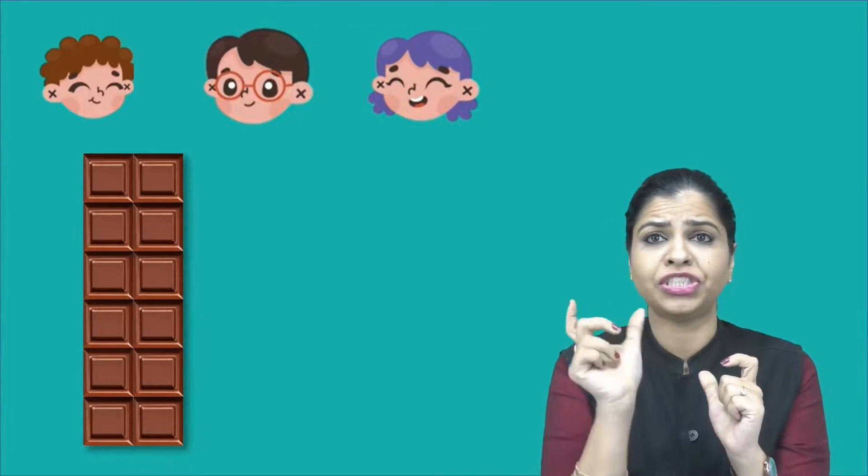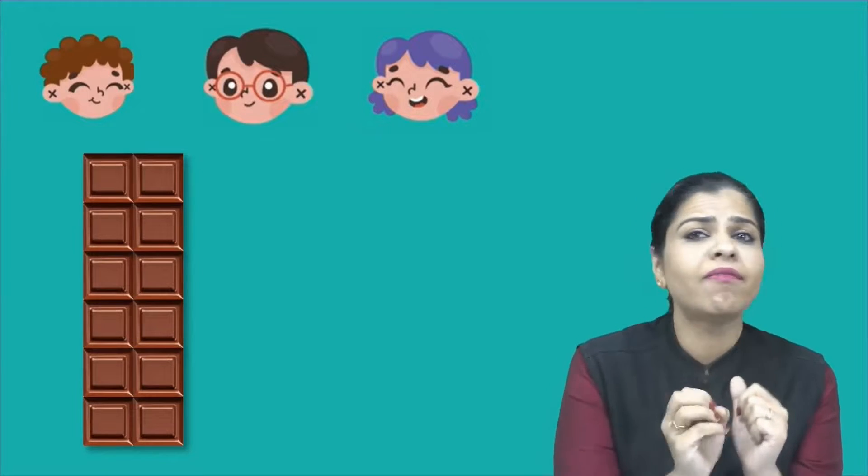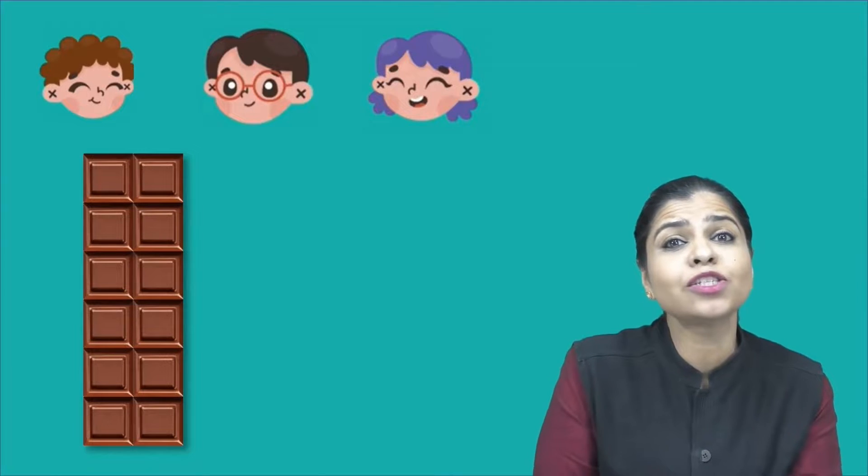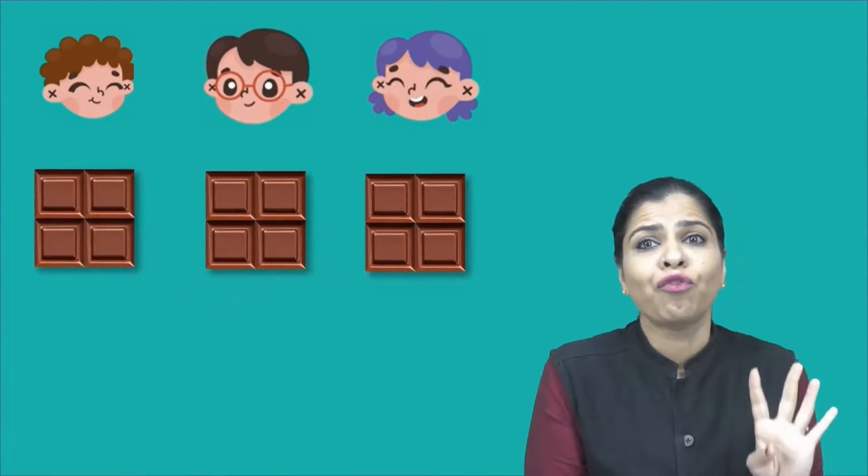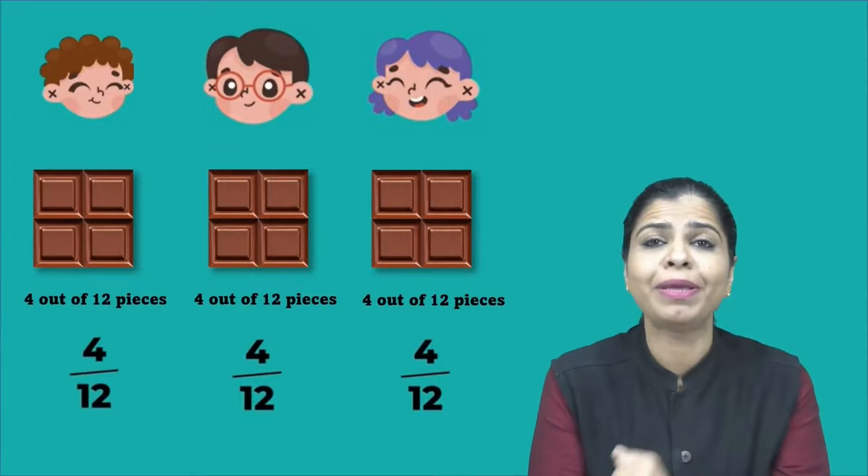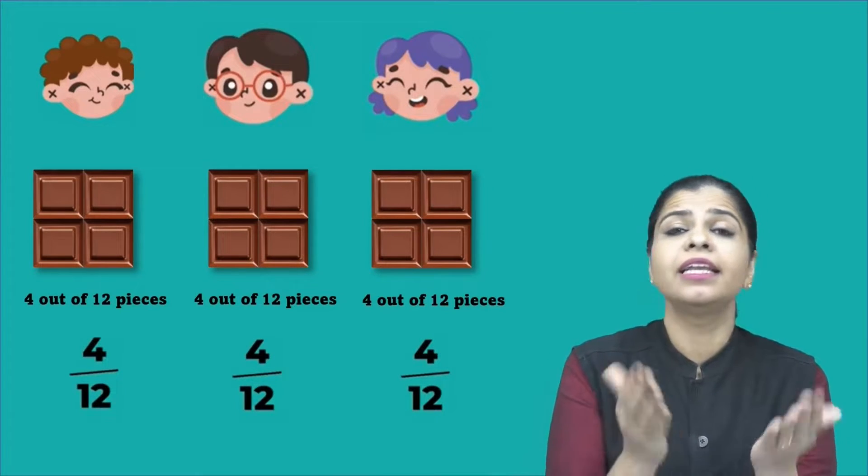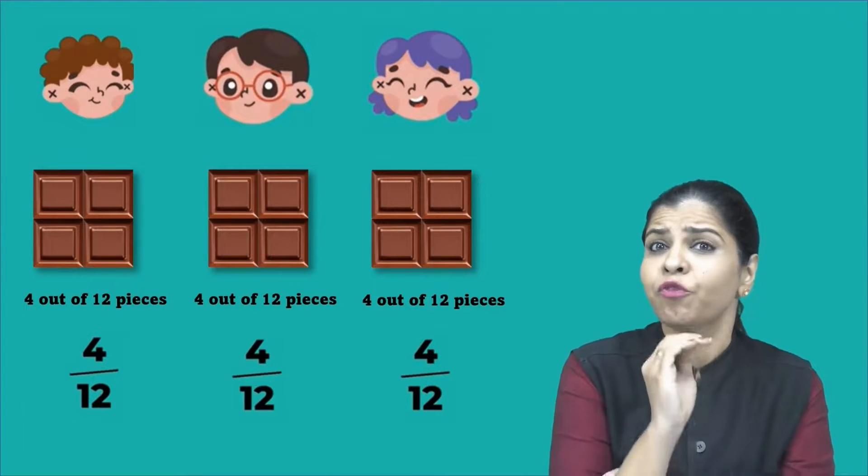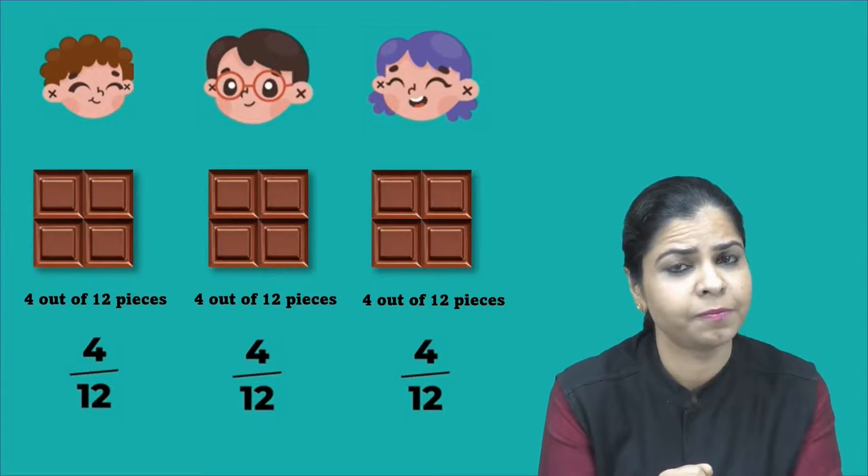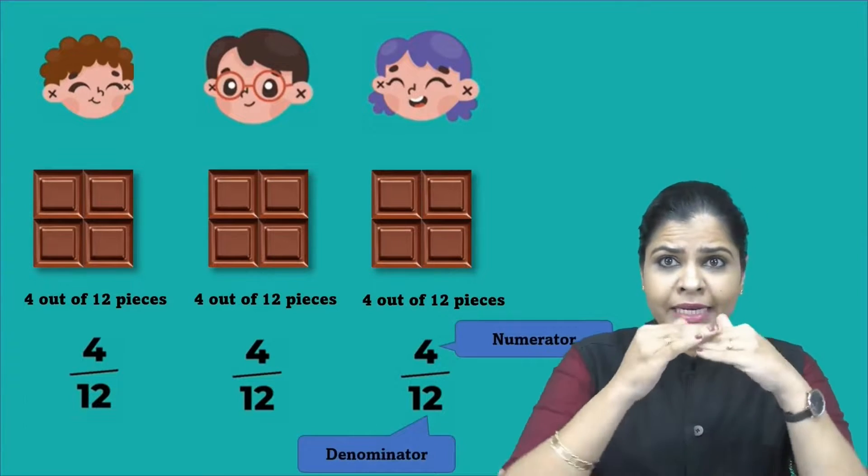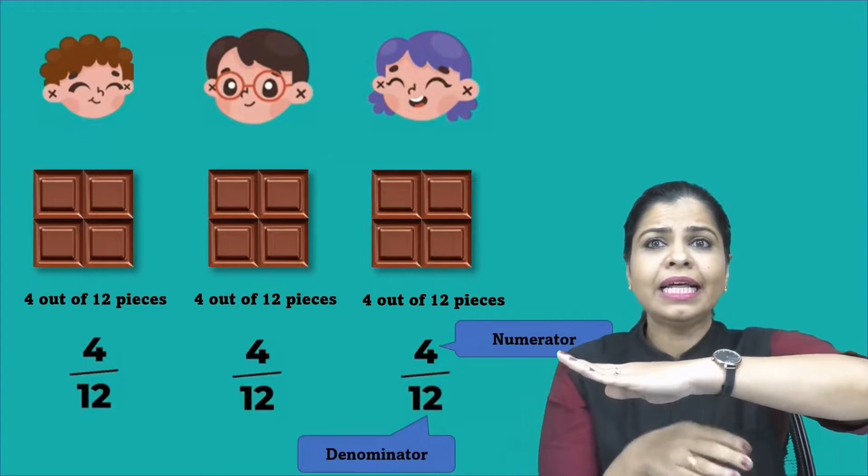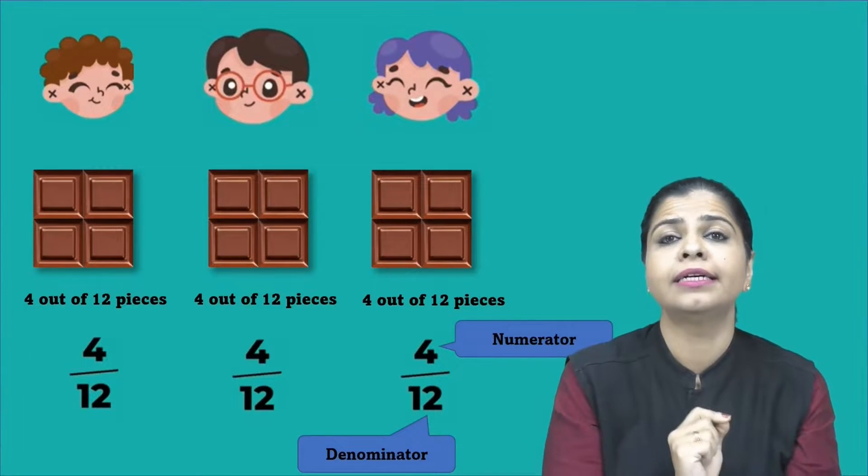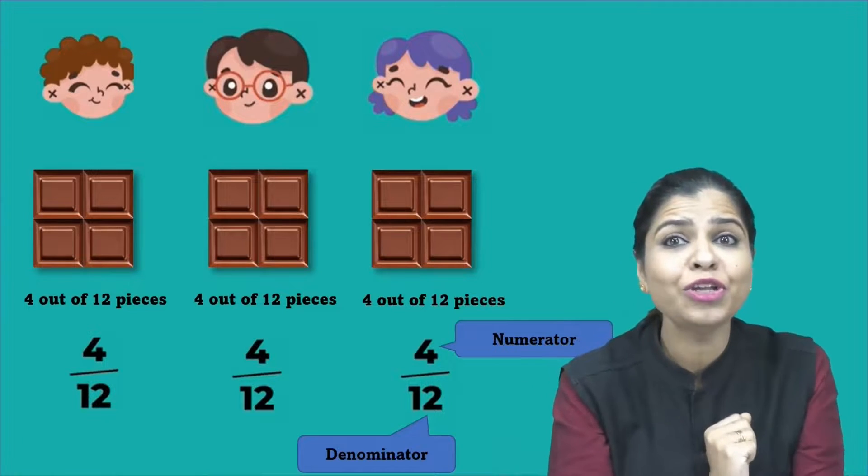Let's do the math. Twelve pieces to be shared by three. So twelve divided by three will give us how much? Four. So each should get how many pieces of chocolate? It is four. So four out of twelve pieces. So mathematically, I can write this as four by twelve. This four by twelve is called a fraction. And you can see a line between four and twelve. The number below the line is called the denominator and the number which is above the line is called the numerator.